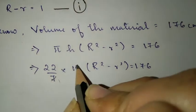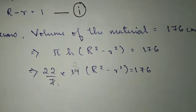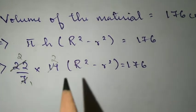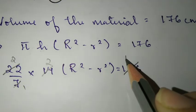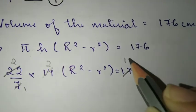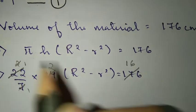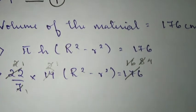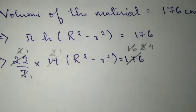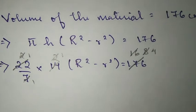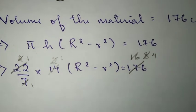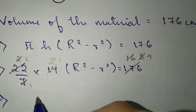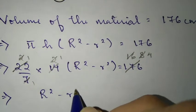If you divide 7 and 14 again, you get 2. Then 22 and 176 divided by 11. After canceling all the numbers, we have R² - r² equals 4.